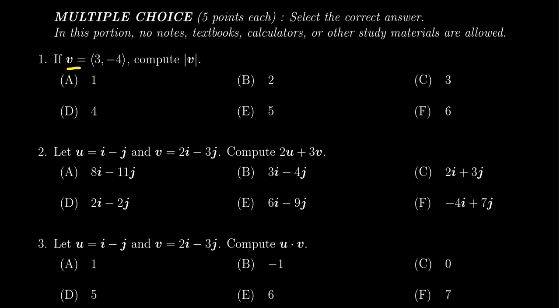We're given a vector v, which is given in algebraic form. The horizontal component is 3 and the vertical component is negative 4. And we're asked to compute the magnitude of the vector.